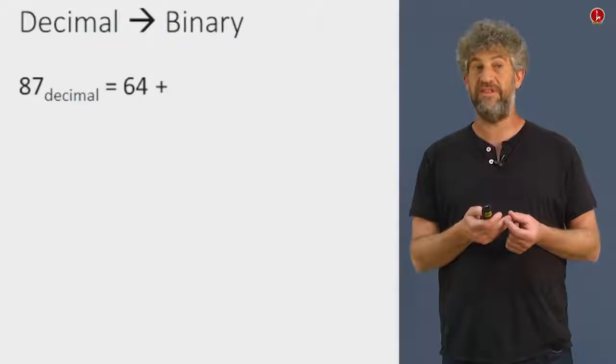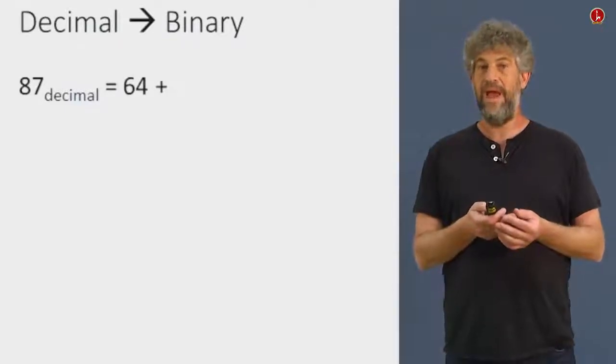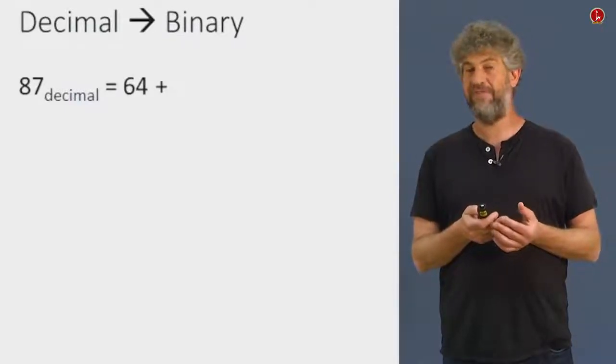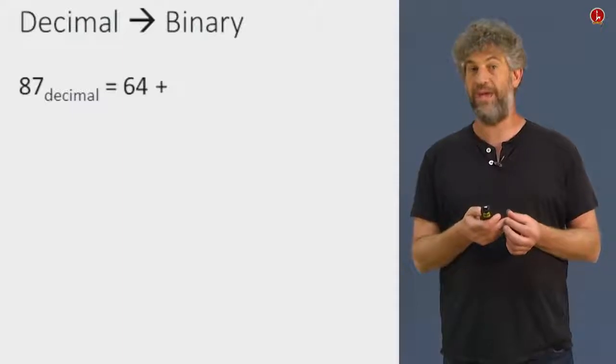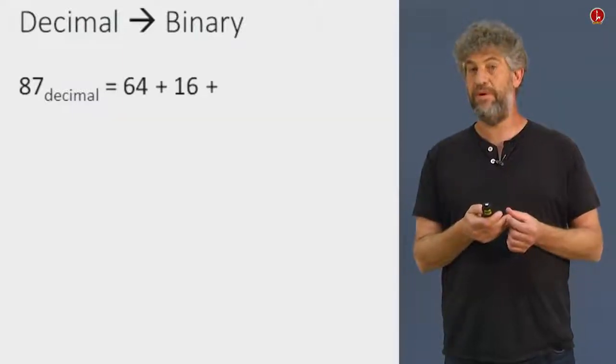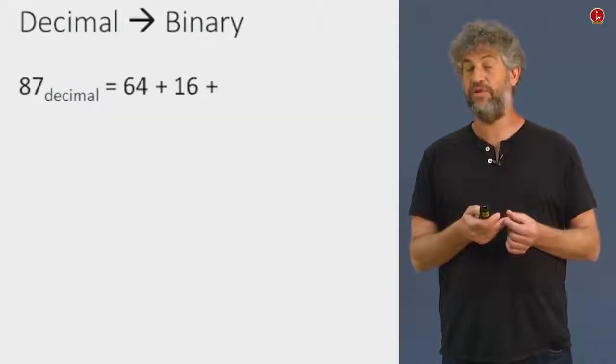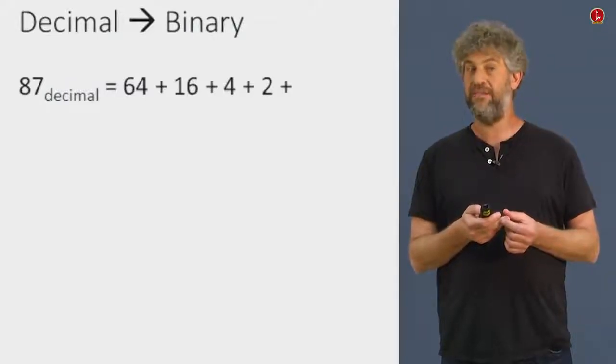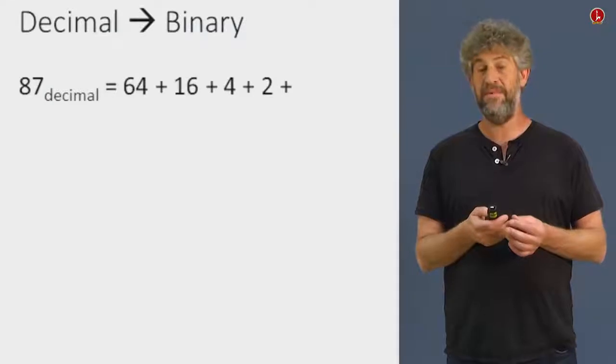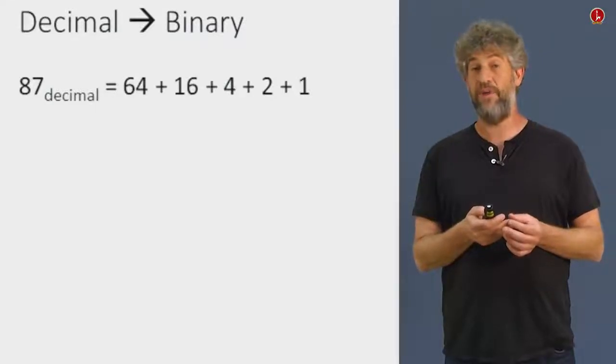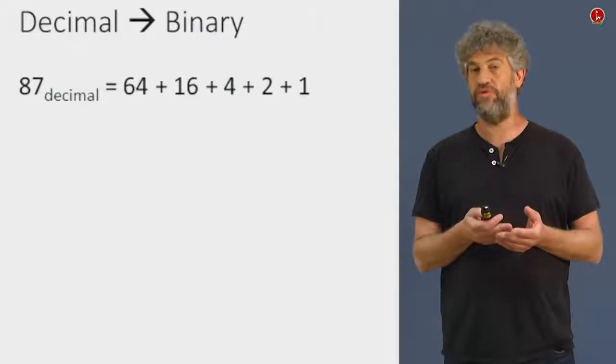So we start by figuring out what is the largest power of 2 that fits into our 87 number, and that is going to be 64. And then what is the next one? After we have 64, what is the next power of 2 that we can add to 64, and we still remain under 87? That turns out to be 16. And so on, we can keep on going. And we write the number 87 as the sum of powers of 2. And it turns out that 87 is exactly 64 plus 16 plus 4 plus 2 plus 1.